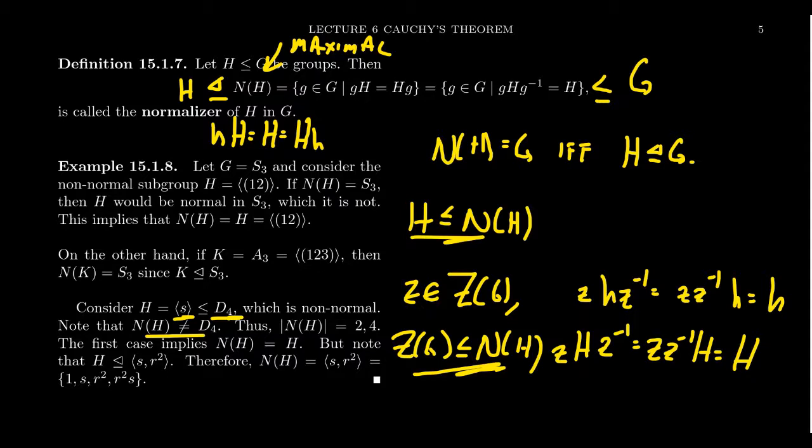So its normalizer can't be everything. It contains itself. So the normalizer has to be a subgroup of D4 that's divisible by two, but not everything. D4 of course has order eight. So that tells you the possible orders of the normalizer of H is two and four. If it were two, it would just be H. So is there something else that could normalize H, right? It's possible. And it turns out there actually is something else.